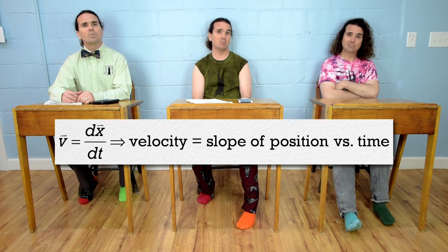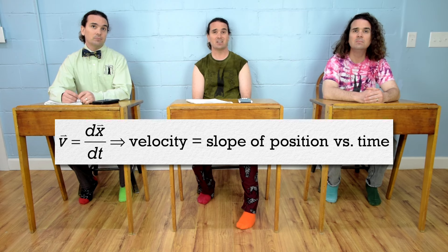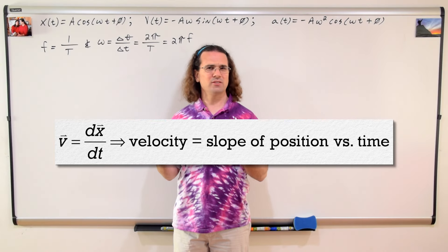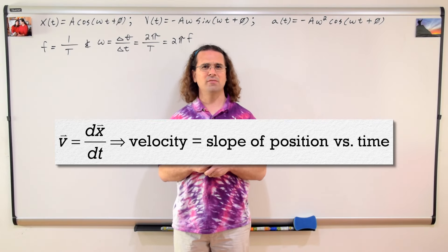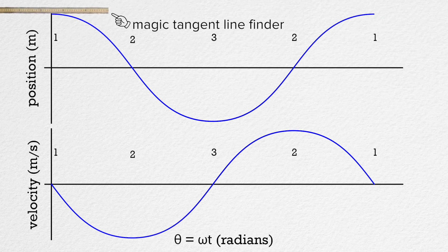We could use the derivative. I don't know calculus. But the derivative represents the slope of the line — the slope of position as a function of time is velocity. Can we use the slope to go from the position graph to the velocity graph? That is a great idea. I actually don't know why we did not do that in the first place. Billy, could you please? We get to use the magic tangent line binder. Let's start at position one.